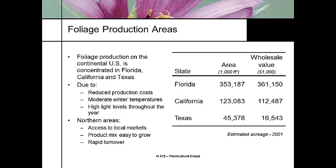Foliage production in the continental United States is primarily focused in Florida, California, and Texas. It's there because they can do a lot of the production outside in shade houses with reduced moderate winter temperatures and high light typically throughout the year, and the plants are easy to ship. In northern areas, some growers will bring in smaller materials and bump them up if they have access to a local market. Florida has the largest share, then Southern California, and the McAllen, Texas area is a strong contender, though a lot of that shipping stays on the Gulf Coast.